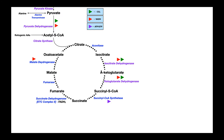Alpha-ketoglutarate will then be converted to succinyl-CoA by the enzyme alpha-ketoglutarate dehydrogenase complex. Its function is very similar to that of pyruvate dehydrogenase except it has a different substrate — it also performs an oxidative decarboxylation. So we get an NADH out of this reaction and we also generate carbon dioxide as a waste product. Alpha-ketoglutarate was five carbons, so if we lose a carbon dioxide, succinyl-CoA is four carbons. From succinyl-CoA all the way through oxaloacetate, these are all four-carbon molecules.